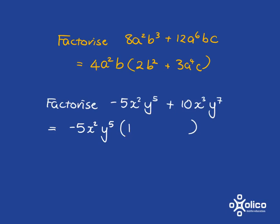And y to the 5 multiplied by 1 gets me to y to the 5. So again, I need another 1, but I don't need to write it down because 1 times 1 is still just 1.